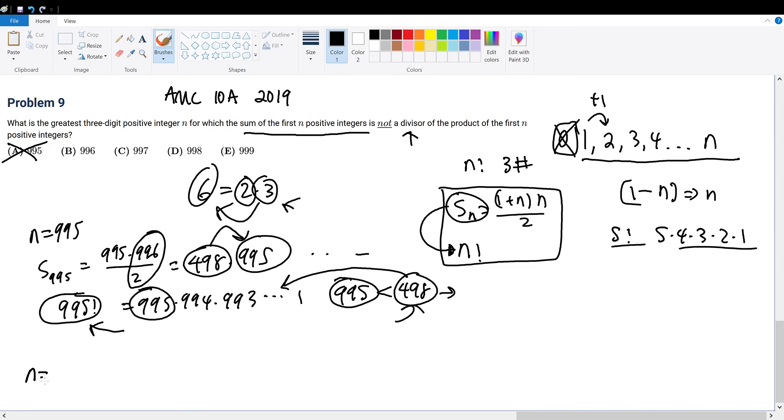Let's try answer choice B when n is equal to 996. What is the summation of 996 from 1? That would be the same thing as 996 times 997 over 2. Simplifying 996 over 2, this is the same thing as 498 times 997. What is 996 factorial? 996 factorial is just 996 times 995 factorial all the way down to 1. And 498 is obviously within this factorial. But what about 997?